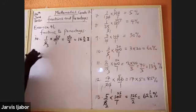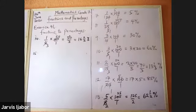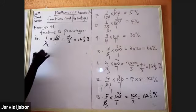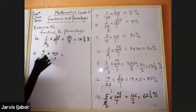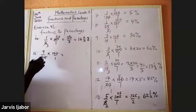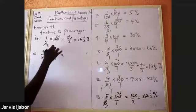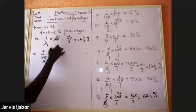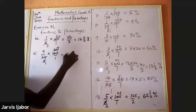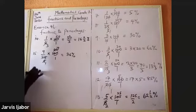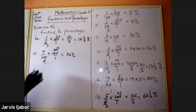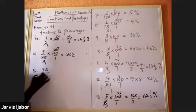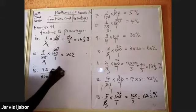Question 15: 9 over 25 times 100 over 1 — 5 goes into 25 five times, 5 goes into 100 twenty times, then 5 goes into 5 once and 5 goes into 20 four times — giving 9 times 4, which is 36 percent. Number 16: 76 over 300 times 100 over 1.